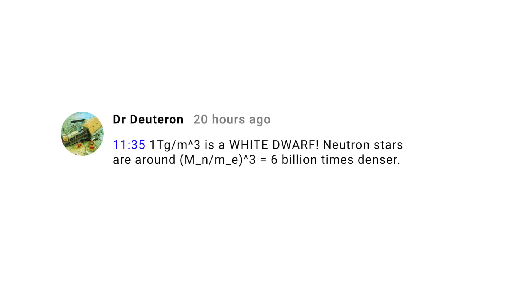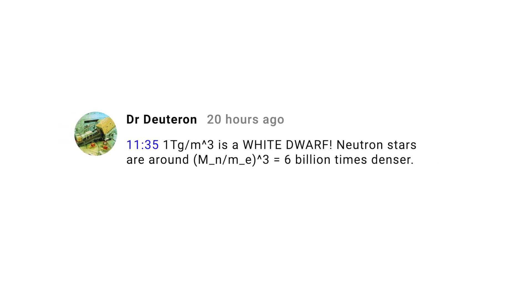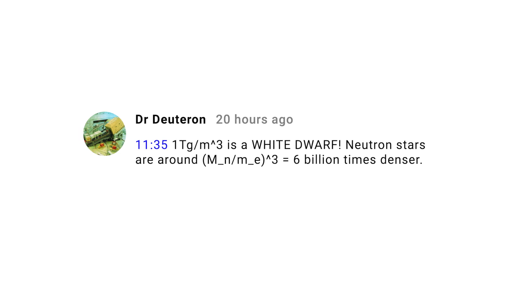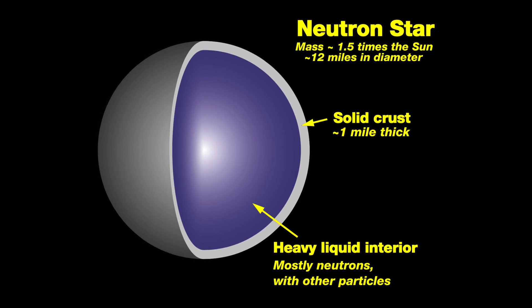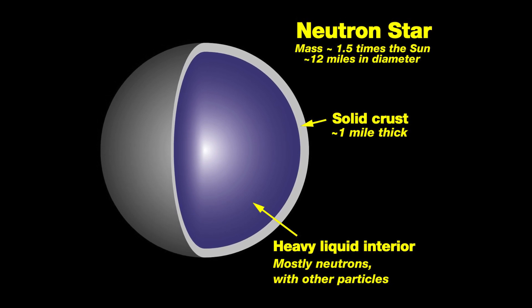Dr. Deuteron admonishes me that a density of one teragram per cubic meter is correct for white dwarfs, and that neutron stars are denser — and that's true. However, neutron stars are thought to be surrounded by a crust of lower density, with specifically the density of white dwarf material. Neutrinos first encounter that outer environment and do not really penetrate deeply into a neutron star. But he or she is right, and I should have been clearer and not glossed over that complication. It's an occupational hazard of trying to answer complex questions. I'd like to thank Dr. Deuteron for reading through the comments and helping answer them — their answers are generally well-informed and high value.